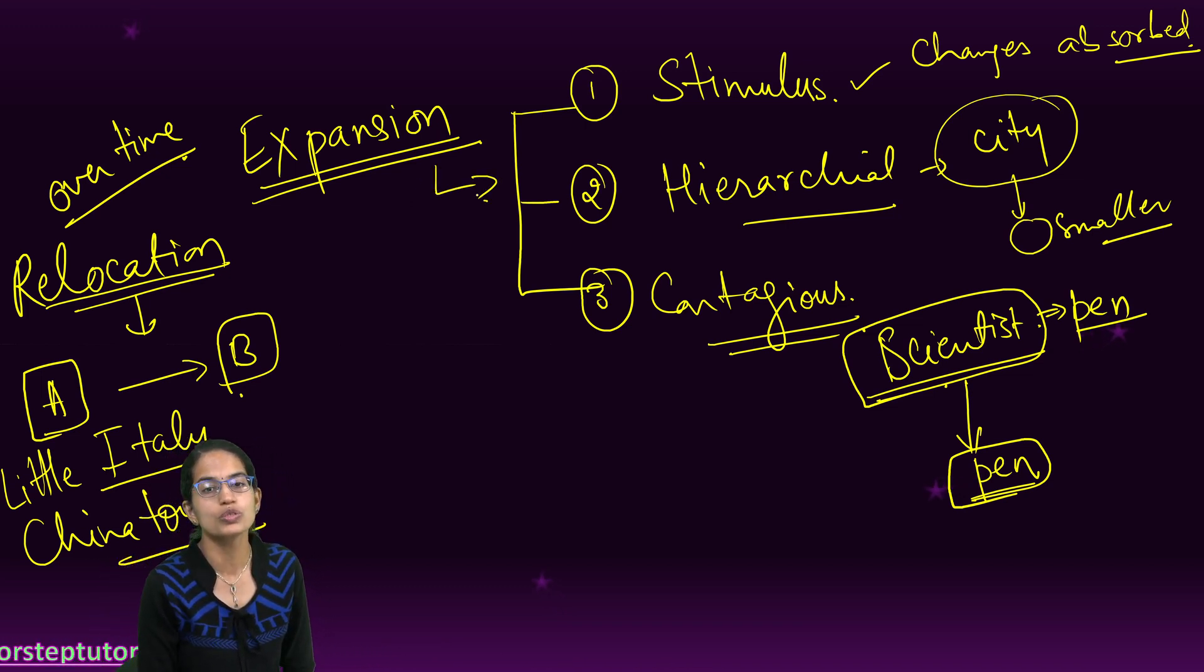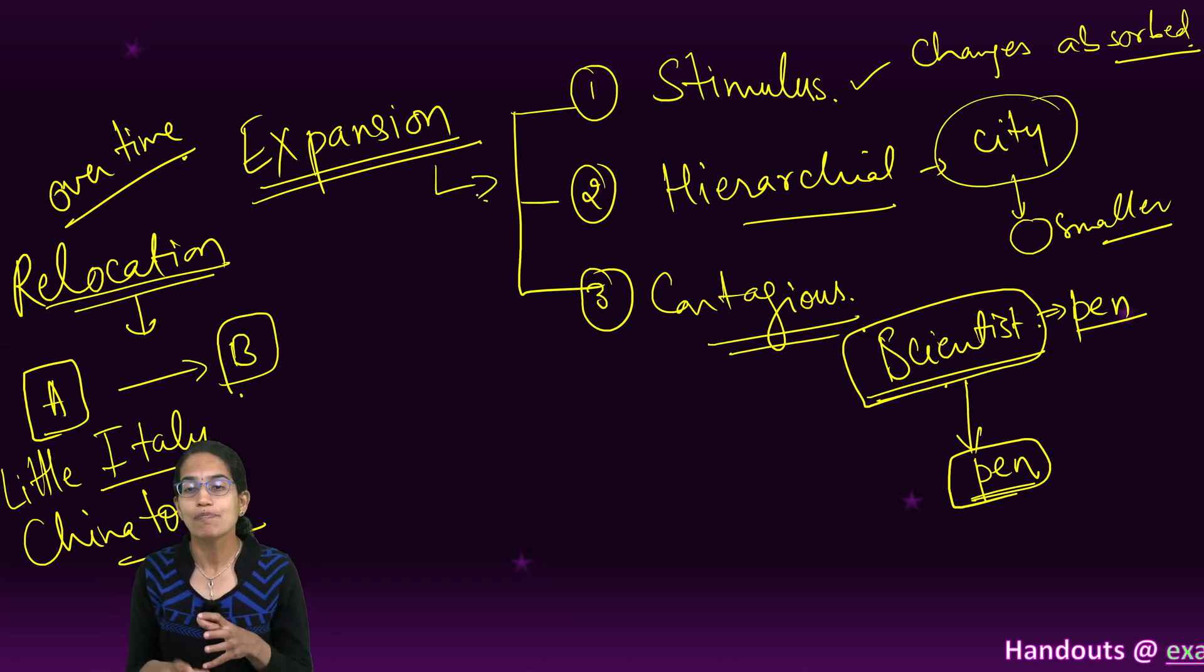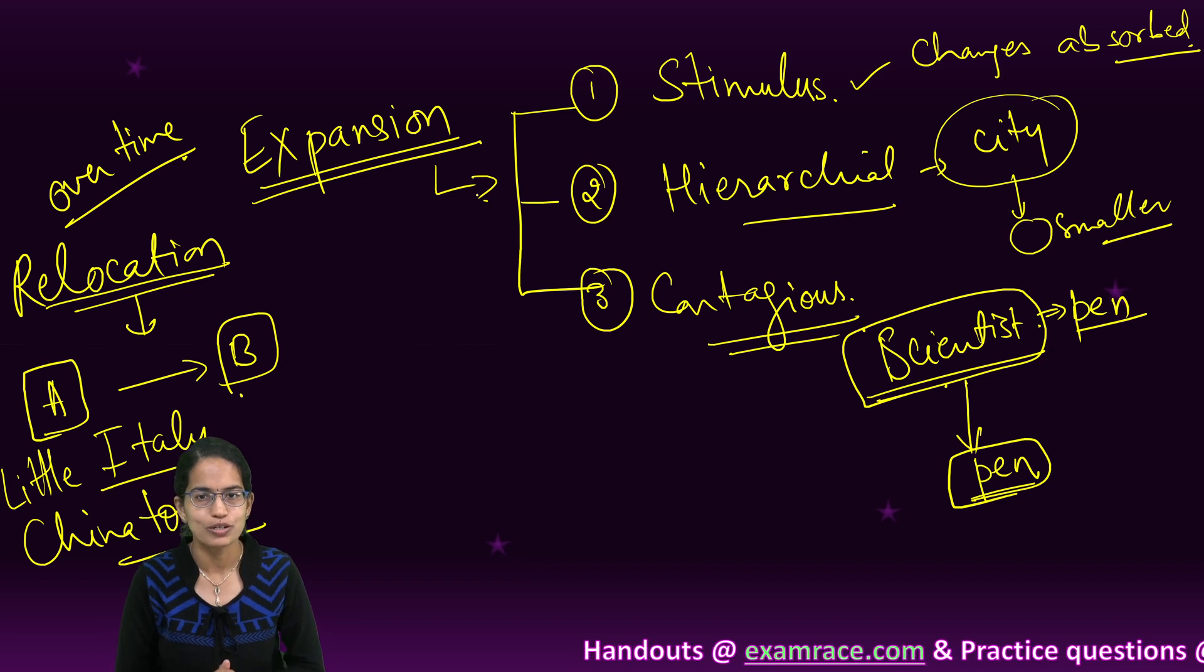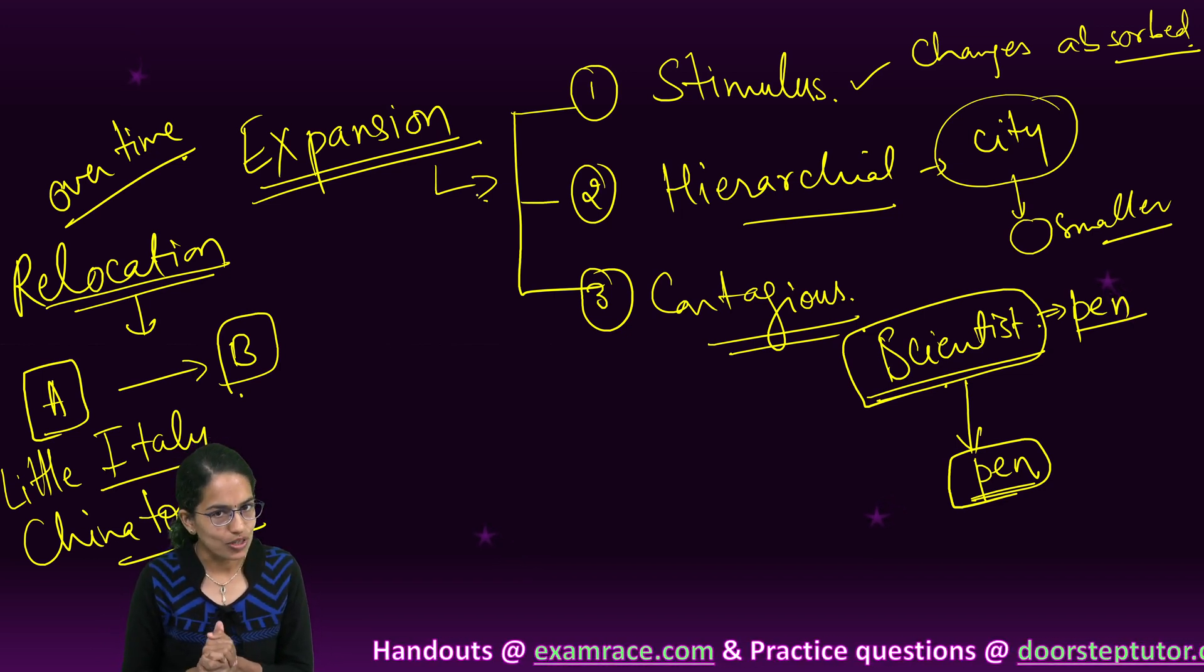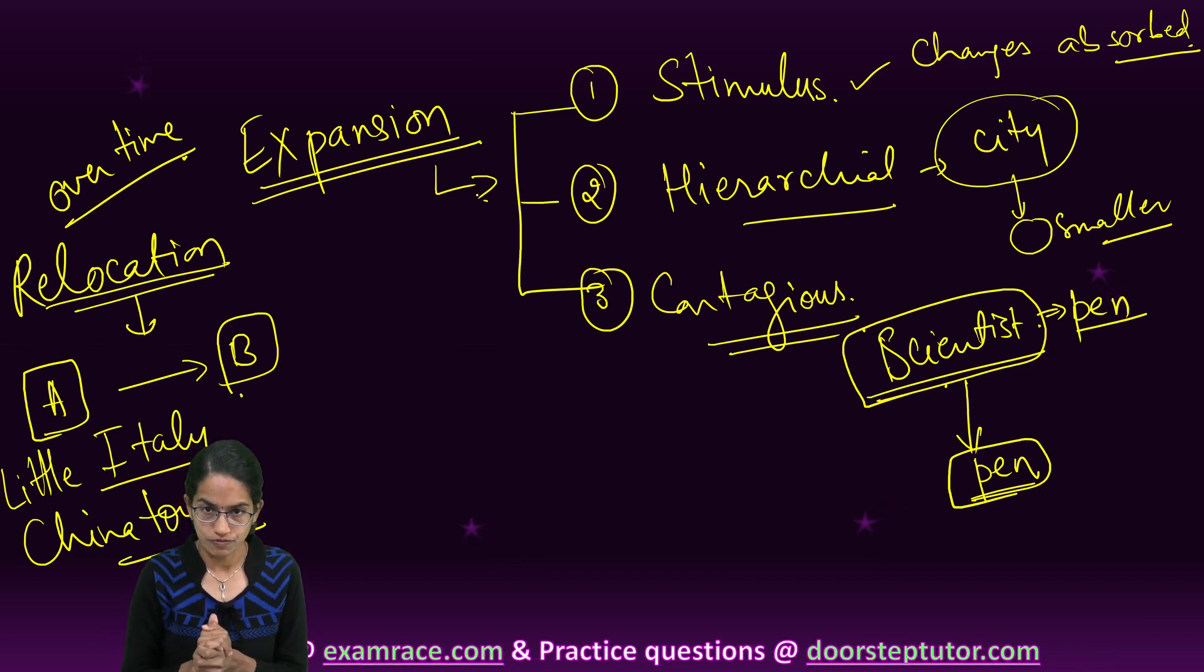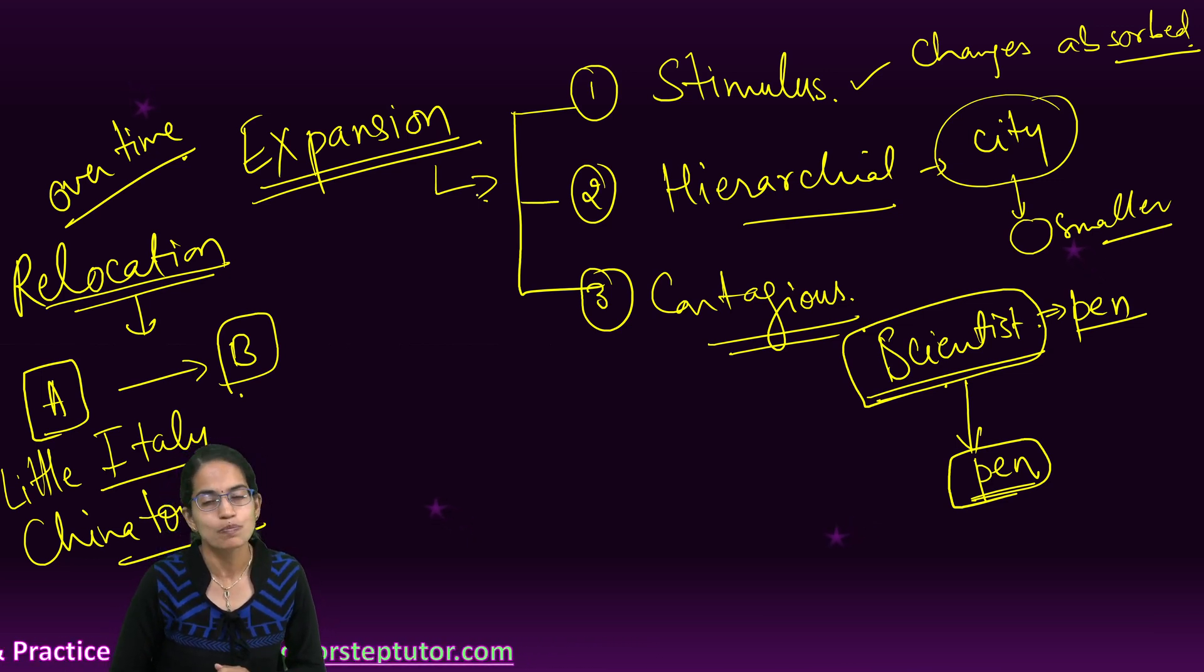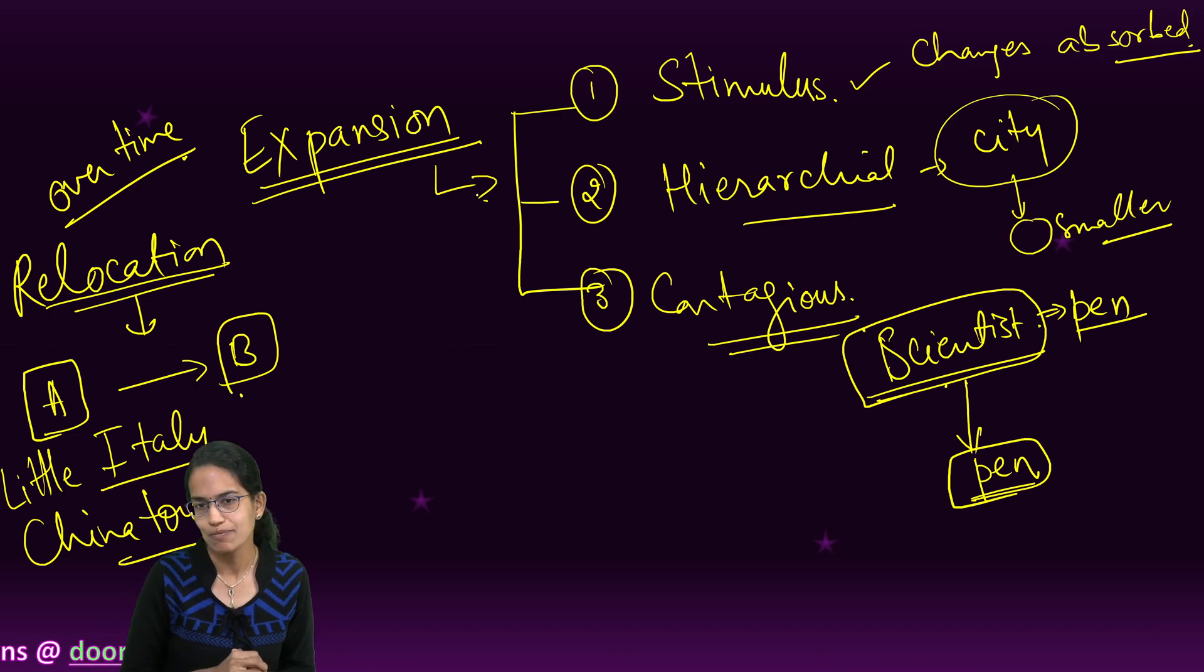Expansion diffusion includes stimulus, hierarchical, and contagious diffusion. All these are part of cultural geography, a very important topic of analysis. We have covered this cultural geography in detail and the theories related to cultural geography in other lectures. Please follow the link below for the complete study material. Wish you good luck.